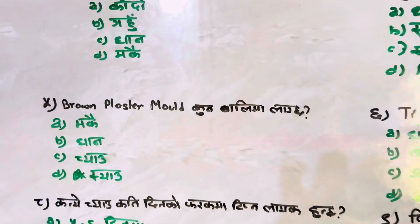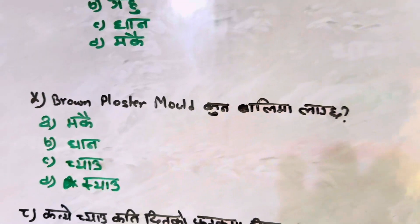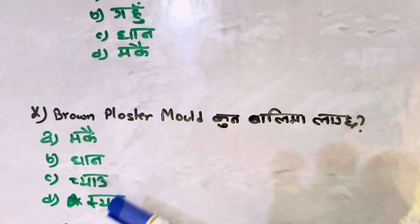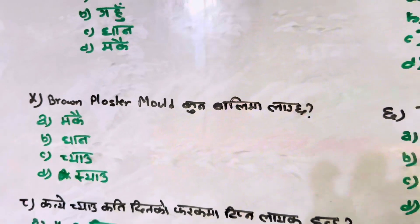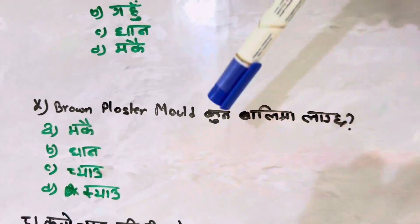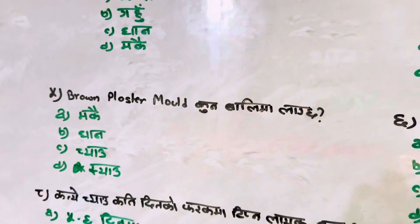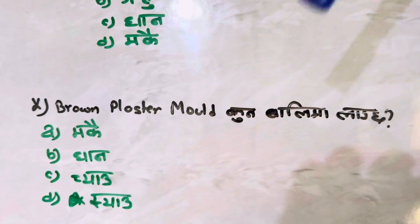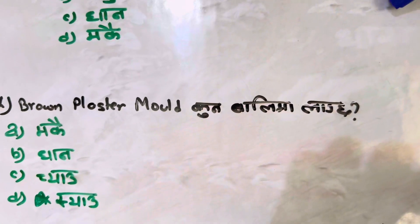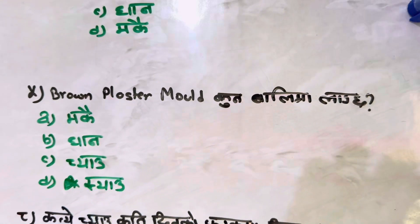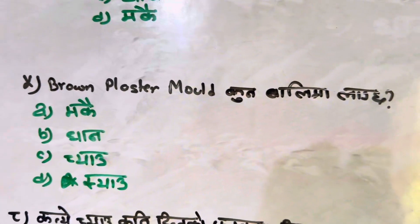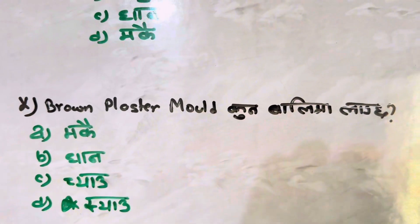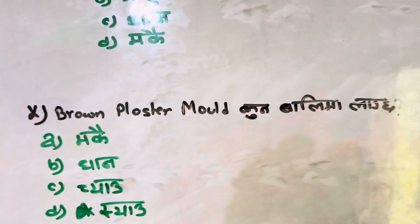This is a brown plaster mold. We have to make a piece — if you have a piece of paper, you will have to work with it. This is the same piece of paper; here we will be able to take it. The paper mold will be made using paper.